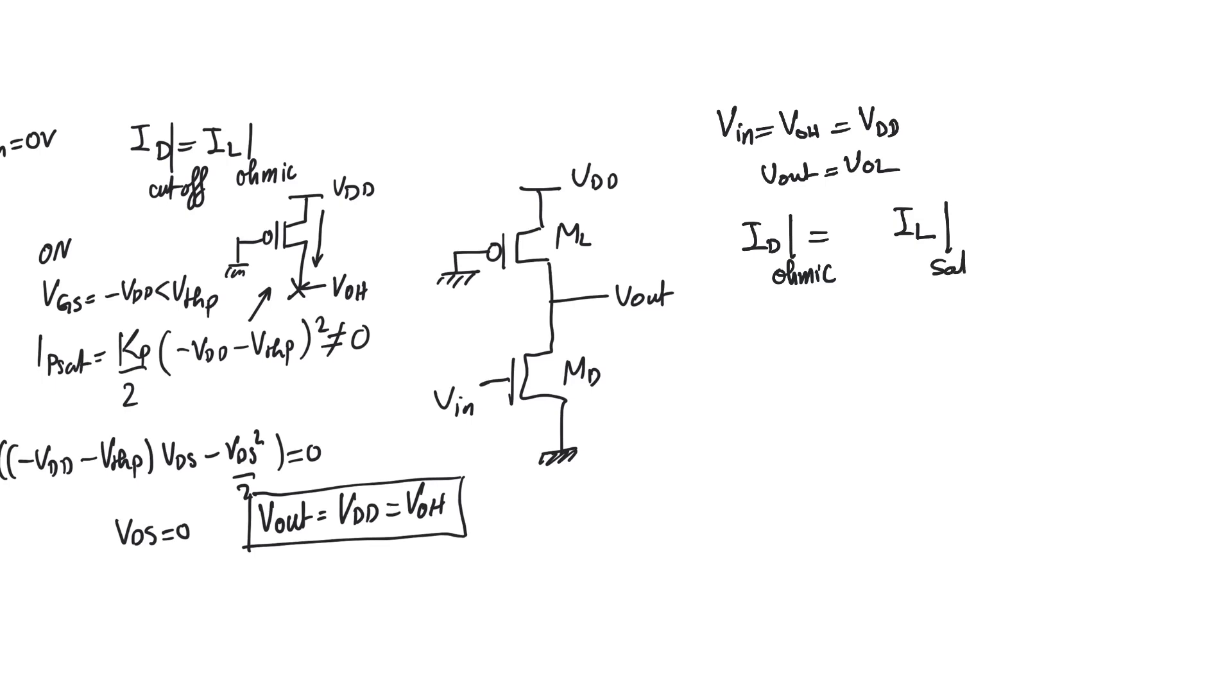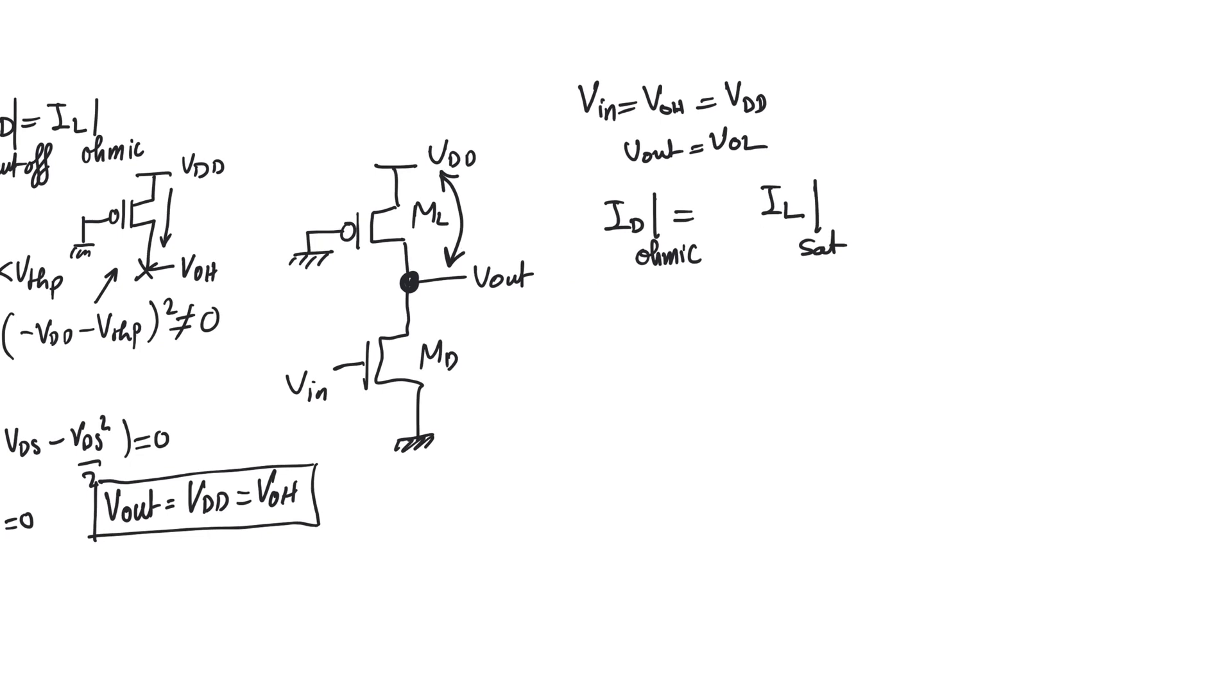The question is what's happening with the load. So the load is going to be saturated. You can either figure it out using the inequality or you can think about it logically. Because if the output voltage, which is the drain for the PMOS for the load, is at a low potential, then that creates a large VSD across the channel of the PMOS. Recall when we talked about how saturation in NMOS and PMOS is actually kind of the same thing. It happens when there is a large lateral field across the channel. And so there is a large lateral field across the PMOS channel.